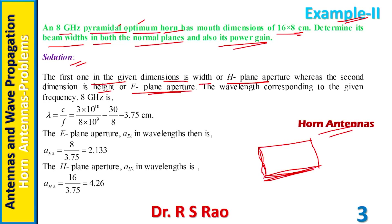The horizontal dimension is called the H-plane aperture; H stands for magnetic field, which is in a plane parallel to horizontal. The vertical dimension is called the E-plane aperture; E stands for electric field, which is in a plane parallel to the narrow wall. In this problem, the H-plane aperture is 16 cm and the E-plane aperture is 8 cm.